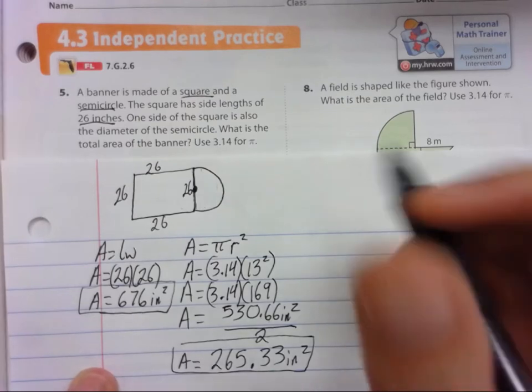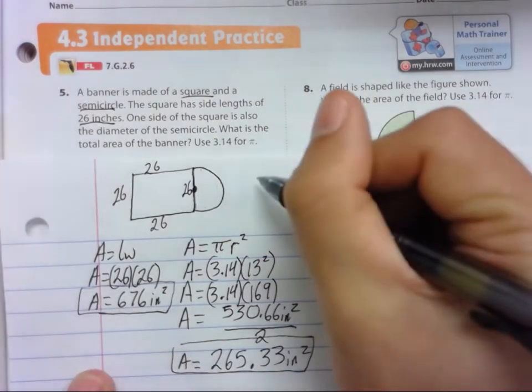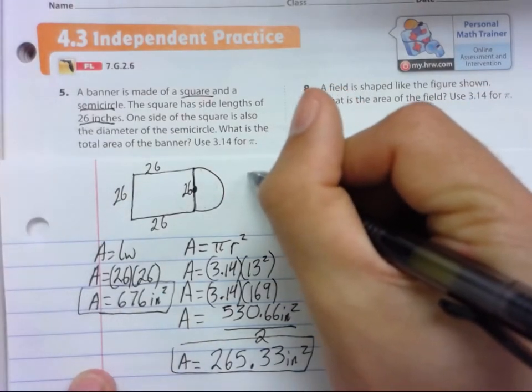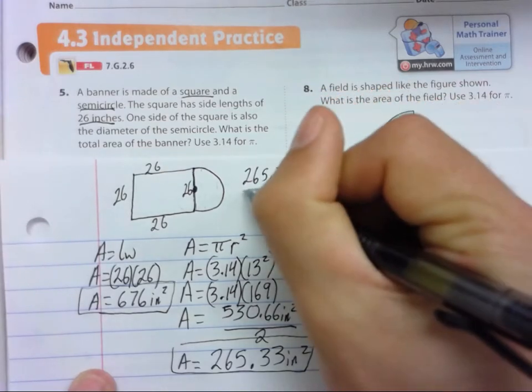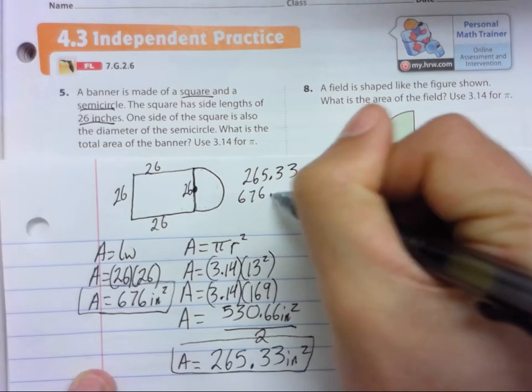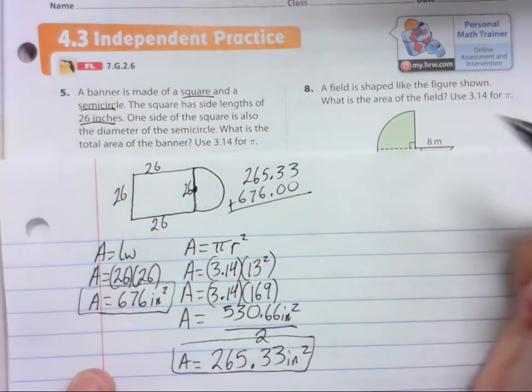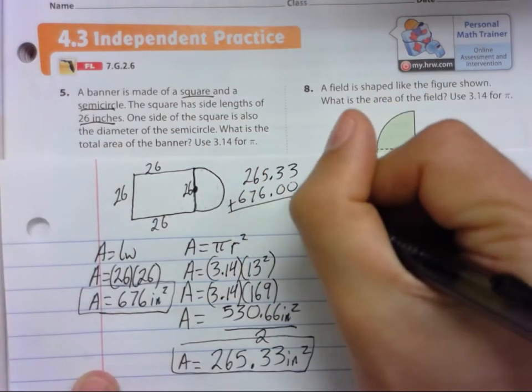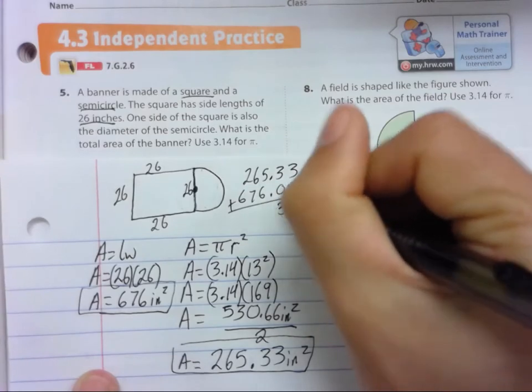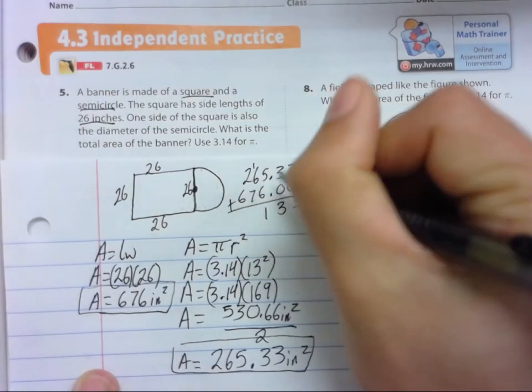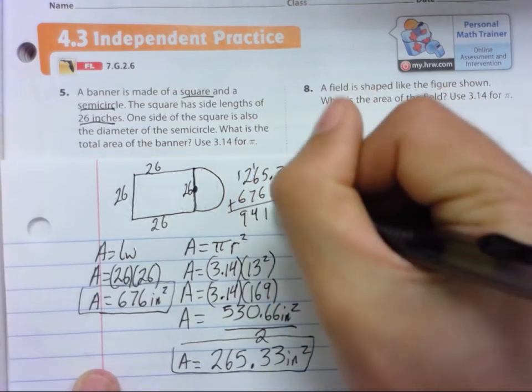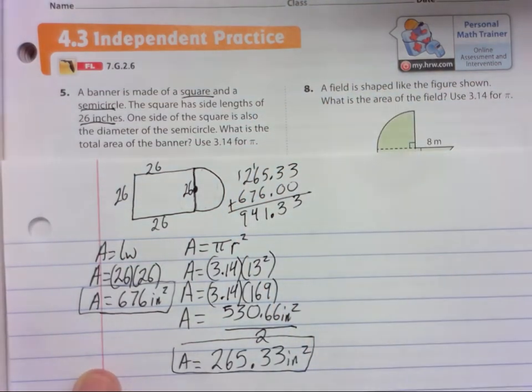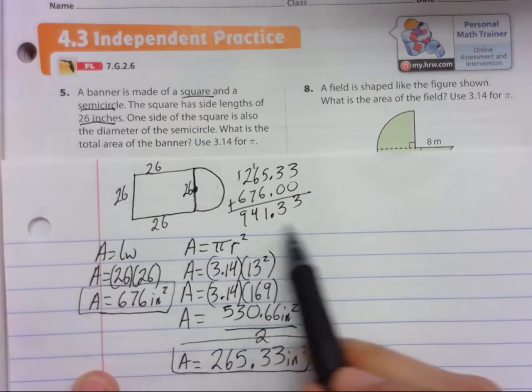So we need to add these together. So 265.33 plus 676. When you add these together, 33, 1 carry the 1, 4, 6, 7, 8, 9, bring this straight down. So you get 941.33.